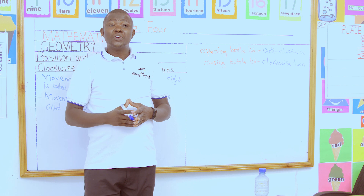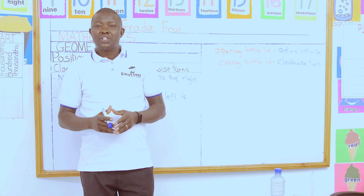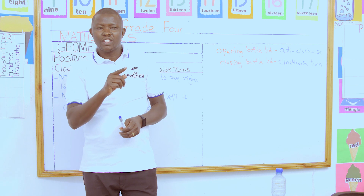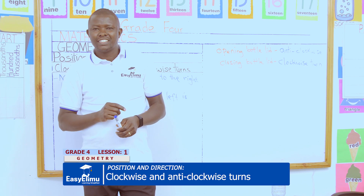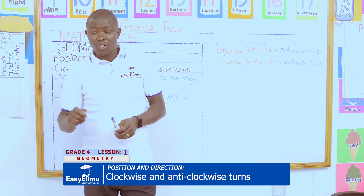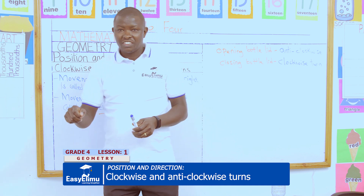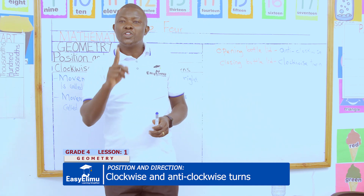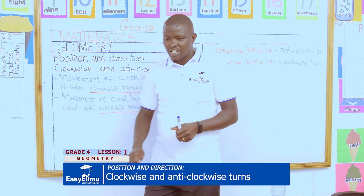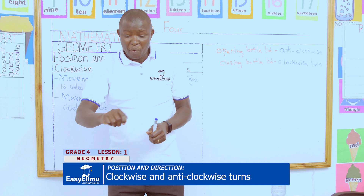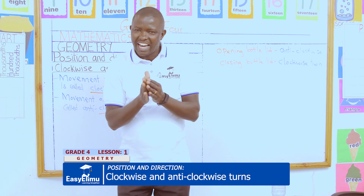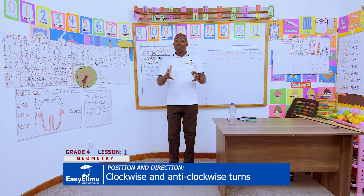Another task: try to open the door of our classroom and close it. Give the first group a turn, then the second group opens. Among the two — opening the door and closing the door — which is the clockwise turn and which is the anticlockwise turn? Opening the door, it comes this side; closing, it goes the other side. Opening the door is the clockwise turn, while closing the door is the anticlockwise turn. Very good!